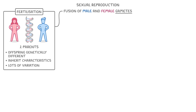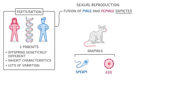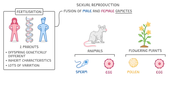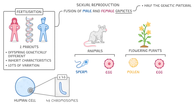Gametes are cells like sperm and eggs in animals, or when looking at flowering plants, pollen and eggs. The important thing about gametes is that they only have half of the genetic material of a normal cell. So whereas a normal human cell has 46 chromosomes, a human gamete only has 23. This means that when the two gametes fuse together, the resulting cell will have 46 chromosomes again, just like our normal cell from before.